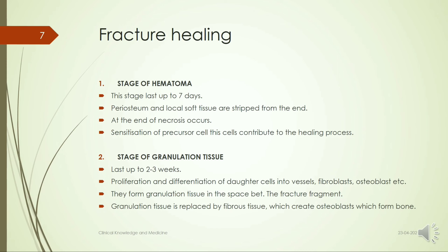Fracture healing occurs in different stages. Stage 1 is the stage of hematoma, lasting up to 7 days. A hematoma forms at the fracture site. The periosteum and local tissues are stripped from the bone ends, and bone end necrosis occurs. Stimulation of precursor cells then begins, as these cells contribute to the healing process.